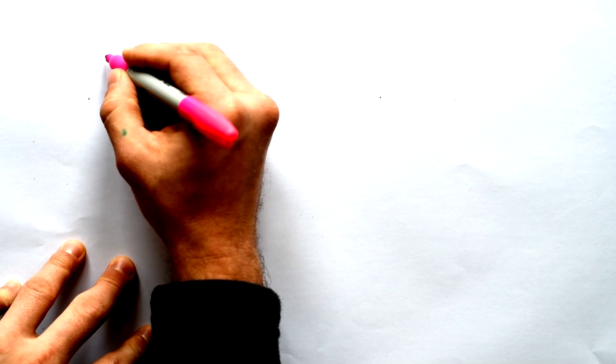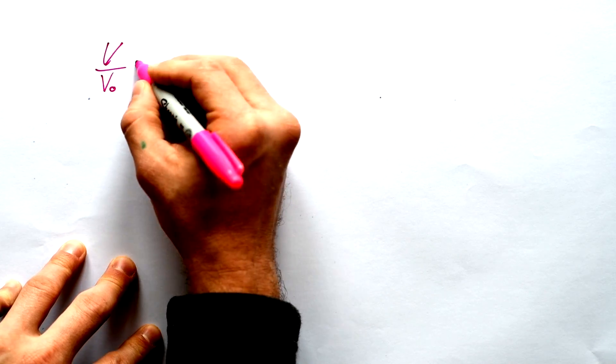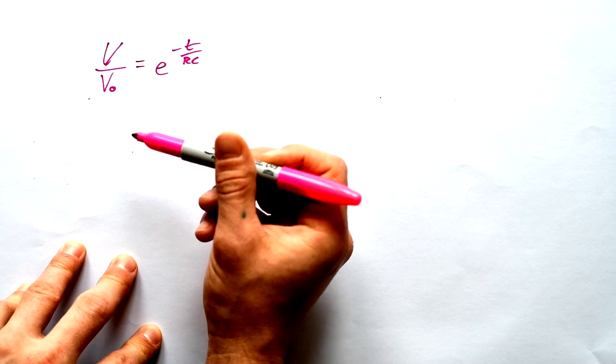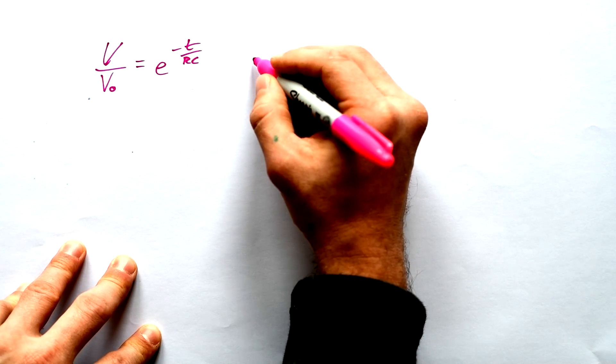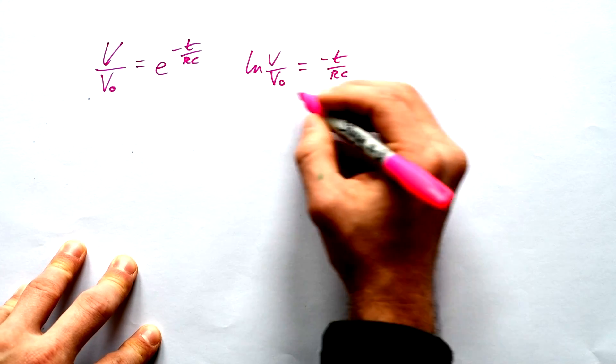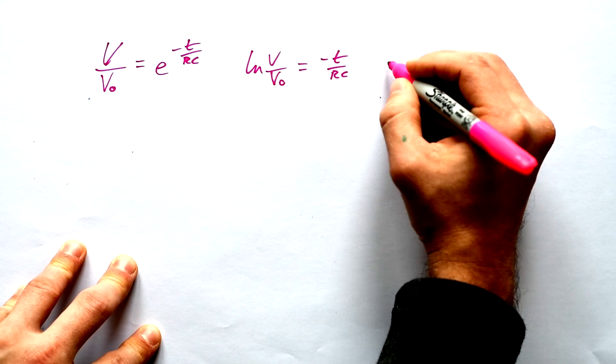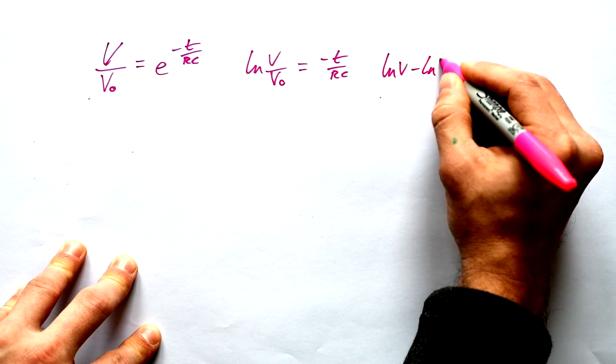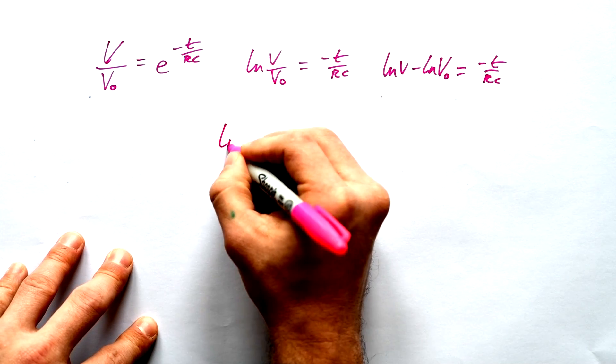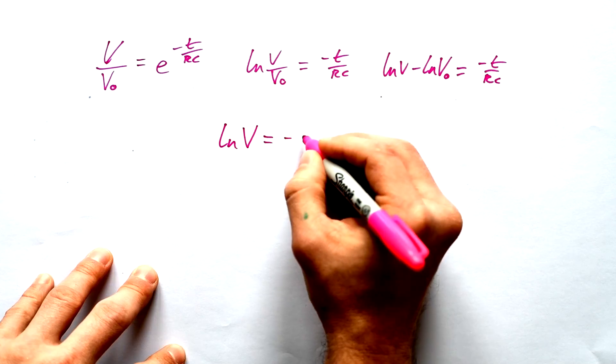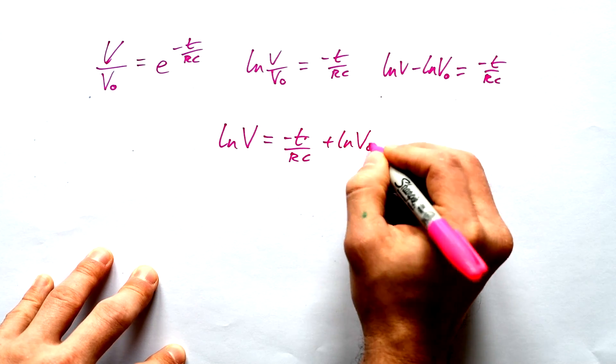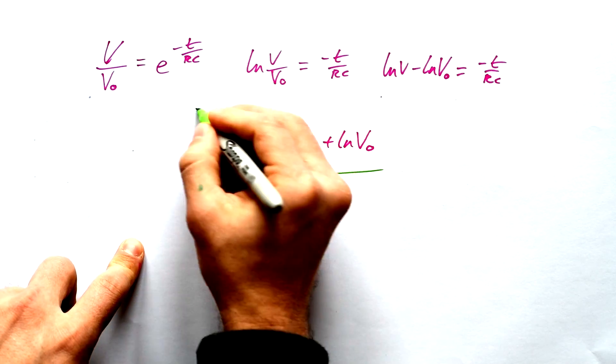Now, our equation for capacitor discharge is this. V over V0 is equal to e to the minus T over RC. So we can see that the PD at any point is not proportional to time because of the exponential. So what we need to do is take logs of both sides. And we log the e, so we just end up with that. If you know your log identities, you know that a log of something over something else is equal to the log of one, take away the log of the other. And so just putting log V0 over the other side, we end up with this. Log of V is equal to minus T over RC plus log of V0. That is the equation that we're going to be working with.